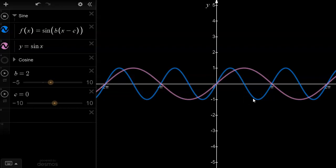So that means the period, which is the width of one cycle, is now just pi, or half of what it was before.